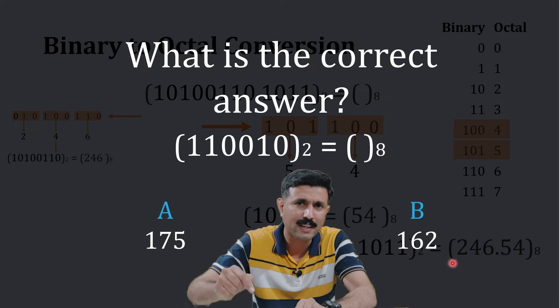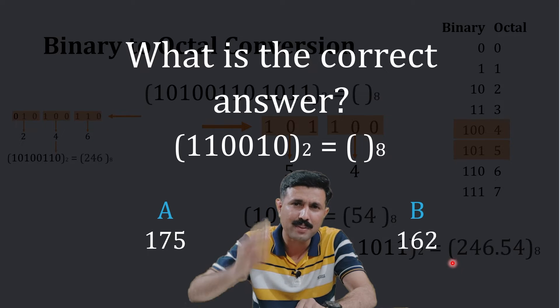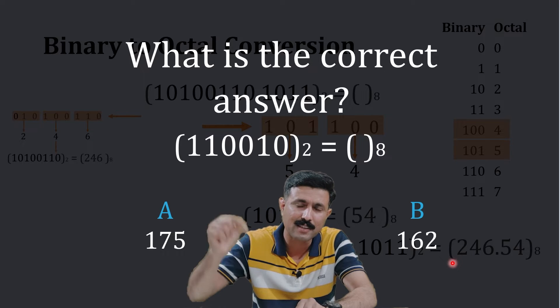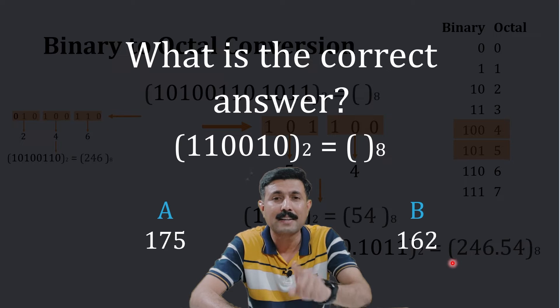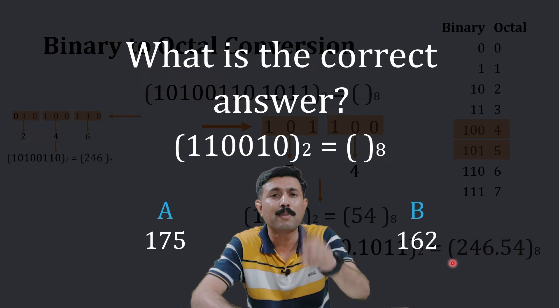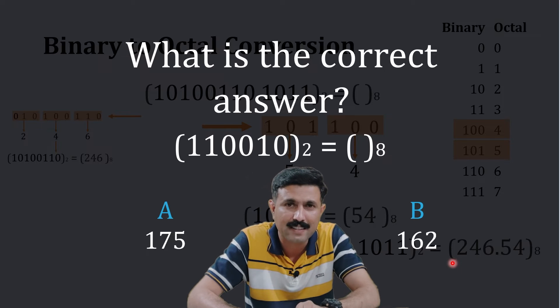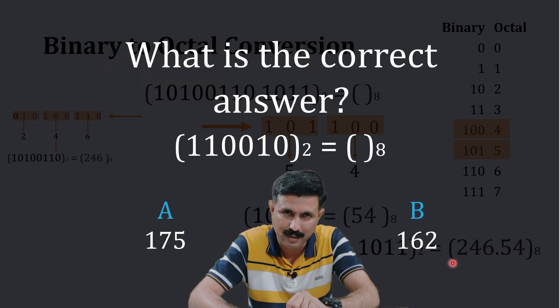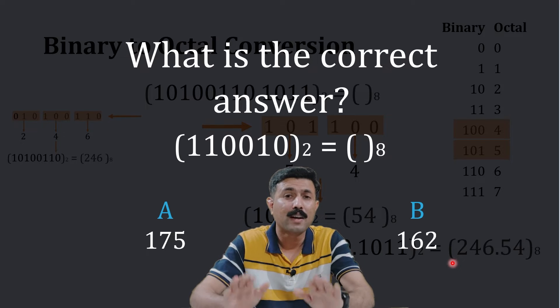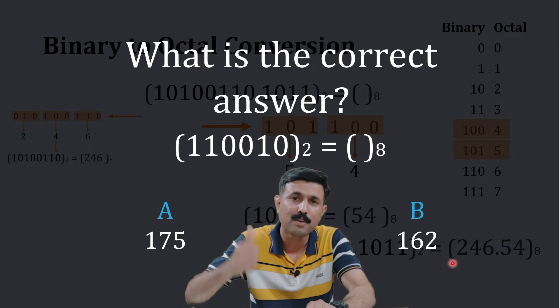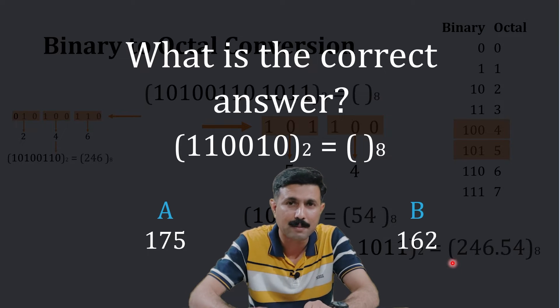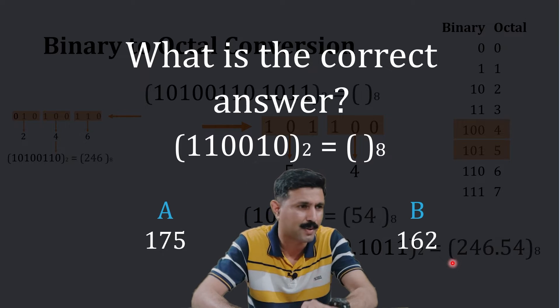You need to convert 110010 into its octal equivalent. Your options are 175 and 162. Pause the video, quickly solve it within 30 seconds, and write the answer in the comments below. Tell me whether you were able to solve it in 30 seconds or not. If you are enjoying learning from this video, do not forget to hit the like button — it helps a lot.